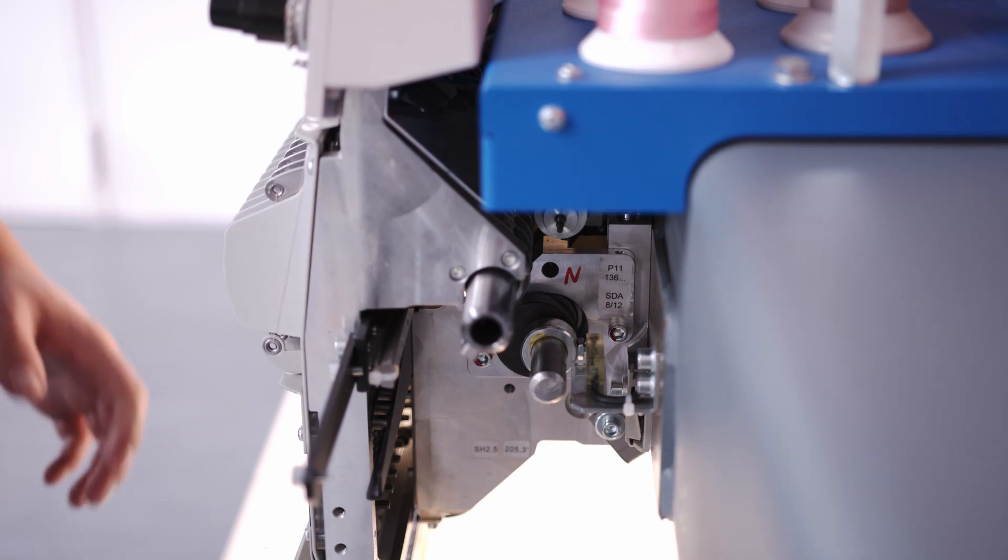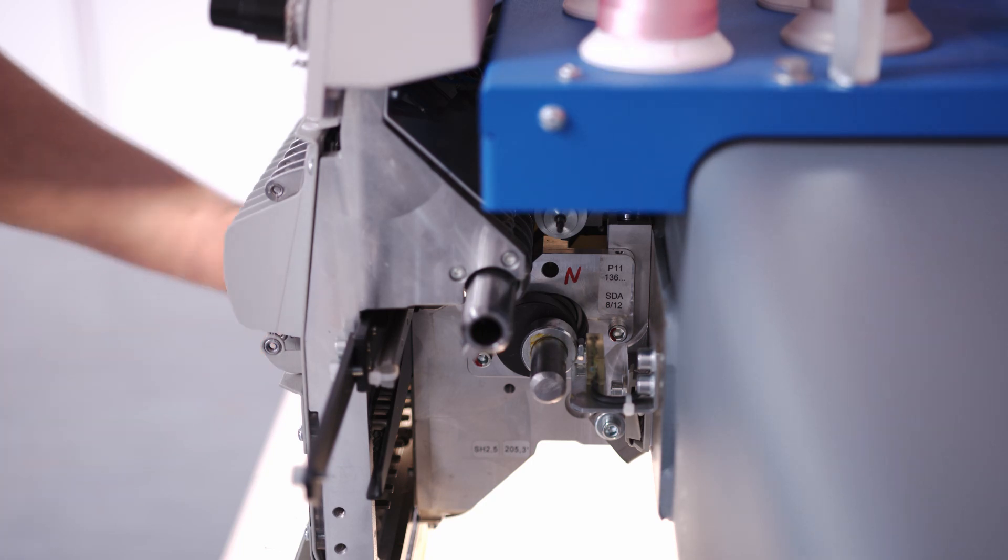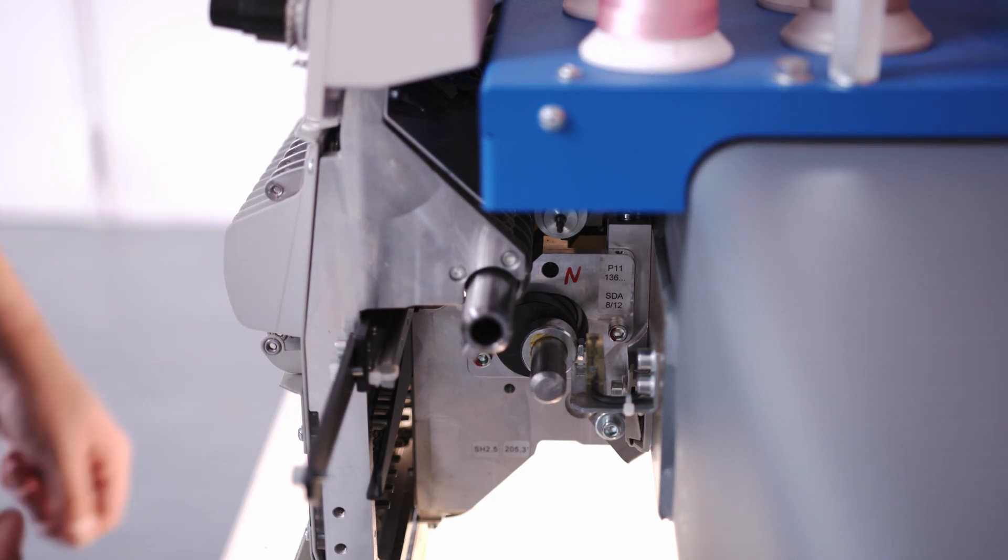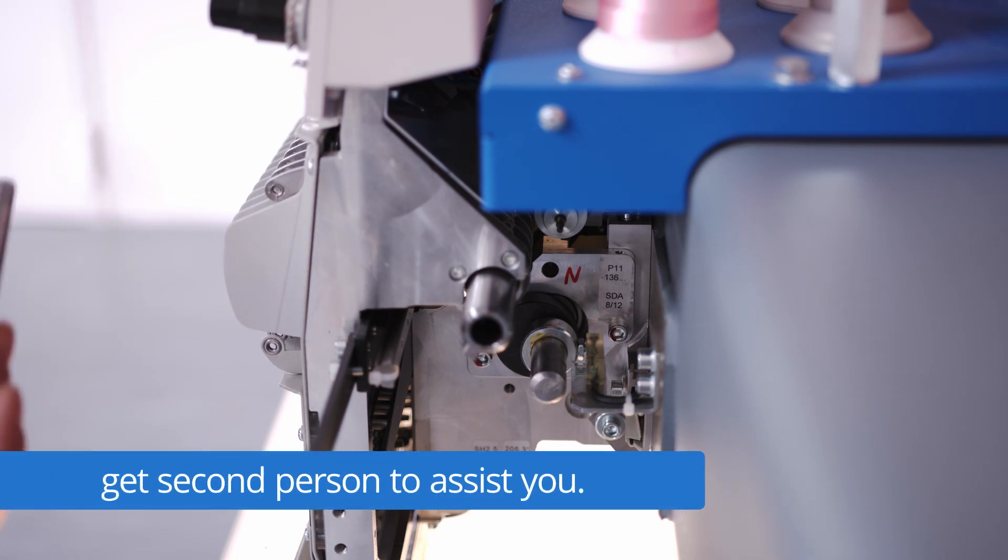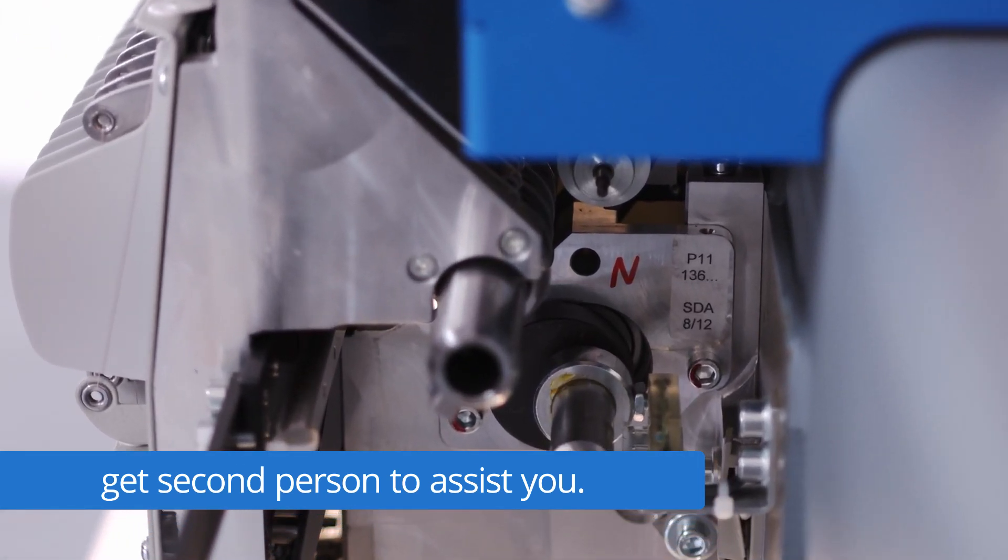So now we are going to the right side of head number one to pin the machine. Therefore it makes sense to get a second person that assists you because one person can turn the main shaft, the other one can find the hole and pin the head.